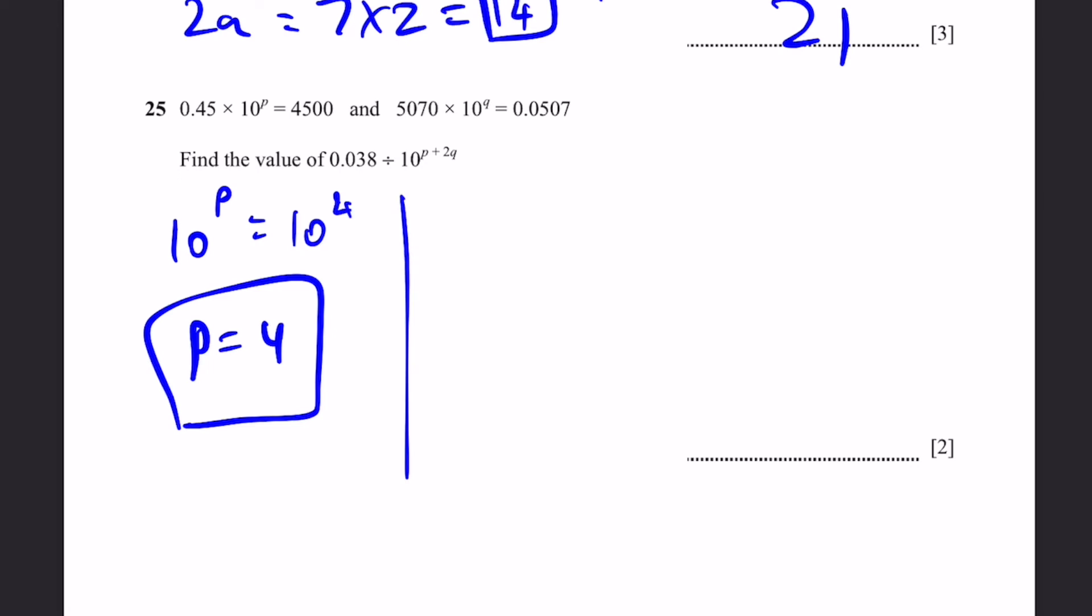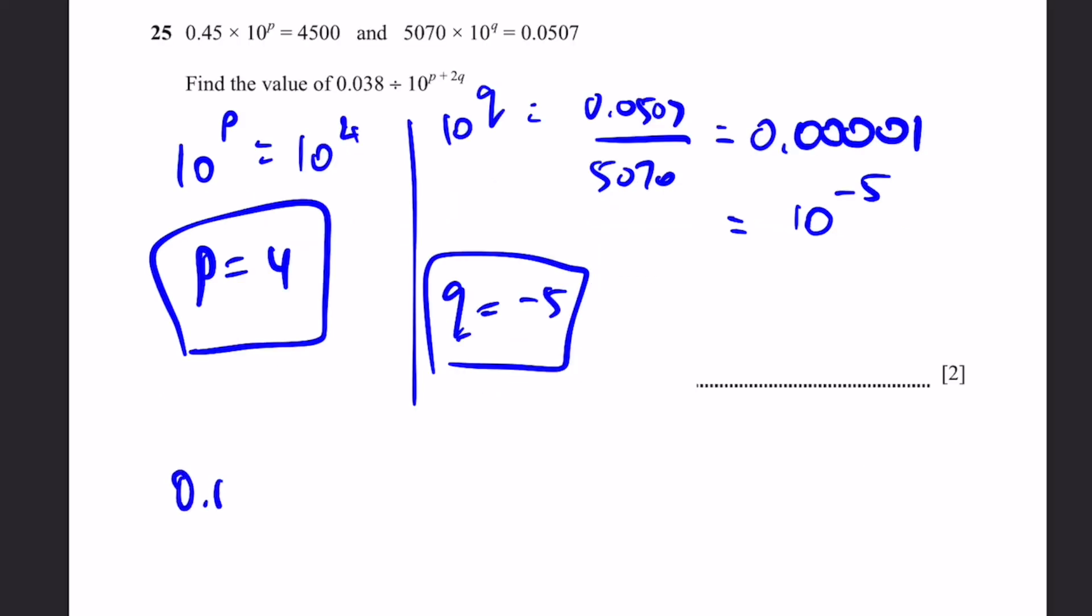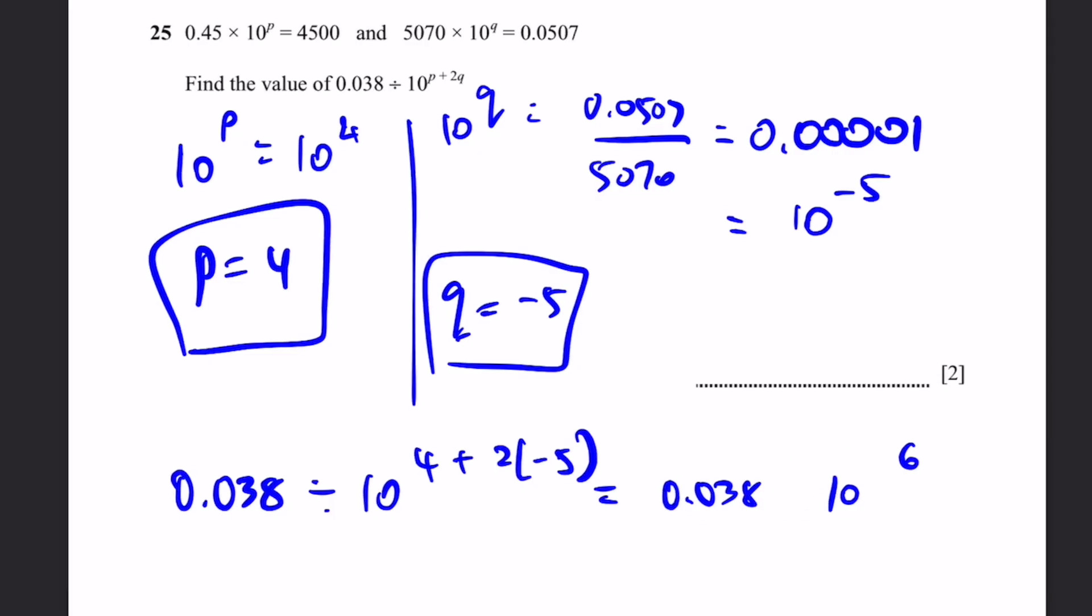Now as for the second one, 5070 times 10 to the power of q equals 0.0507. So 10 to the power of q is equal to 0.0507 by 5070, which is equal to 0.00001 if we did it correctly. And this can be written as 10 to the power of minus 5. And that means q is equal to minus 5. So 0.038 divided by 10 to the power of p plus 2q, that's what we need to find. 10 to the power of 4 plus 2 times minus 5. So that's 0.038 divided by 10 to the power of minus 6.